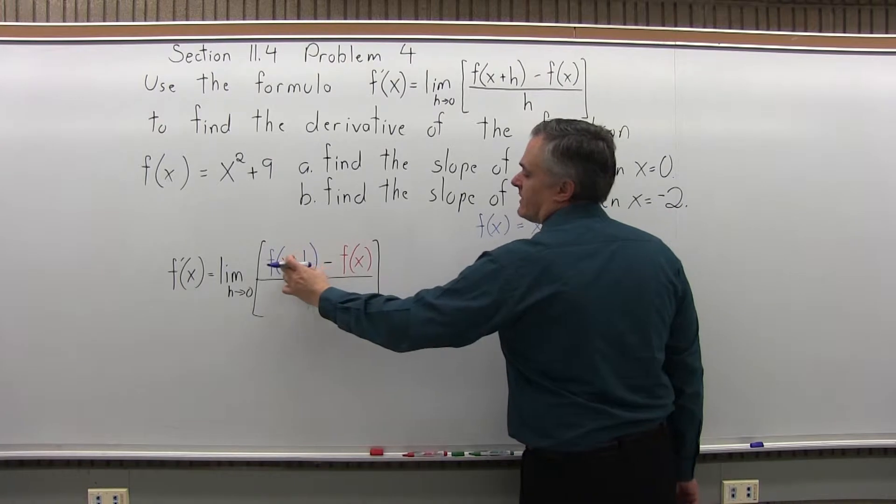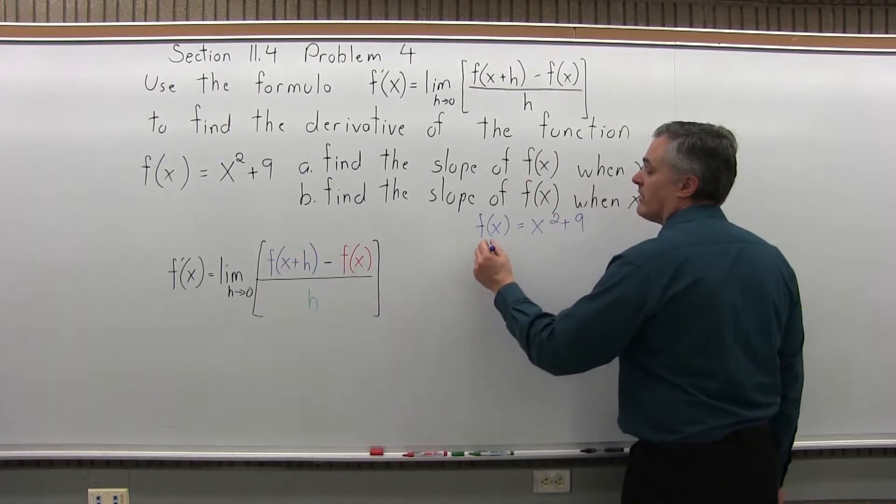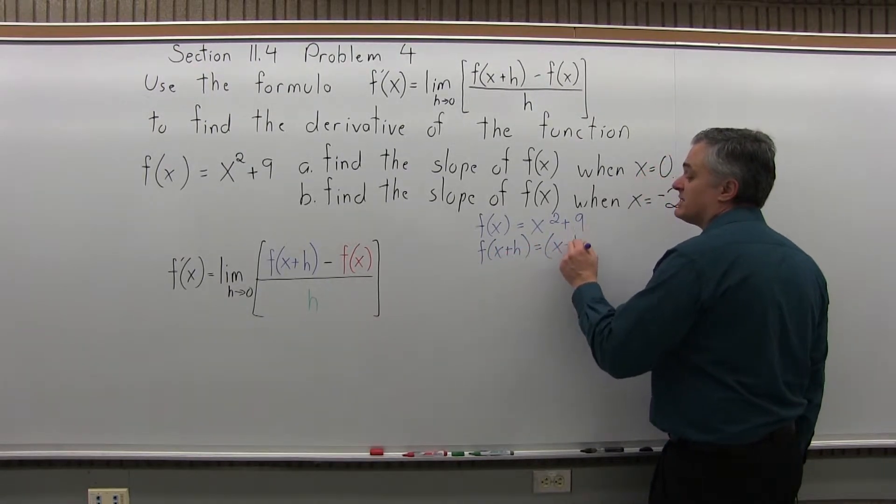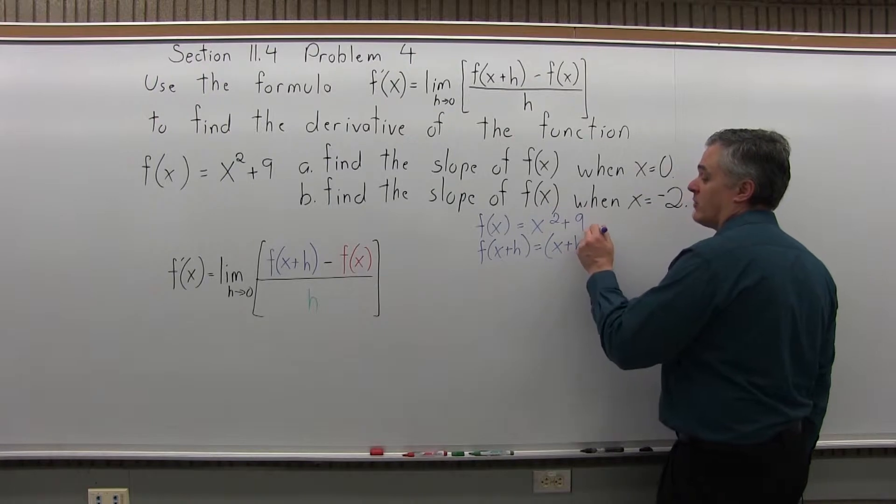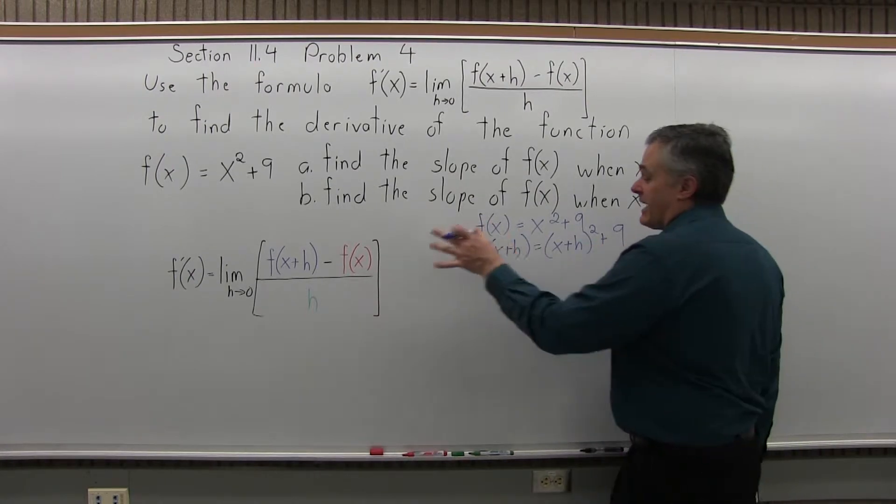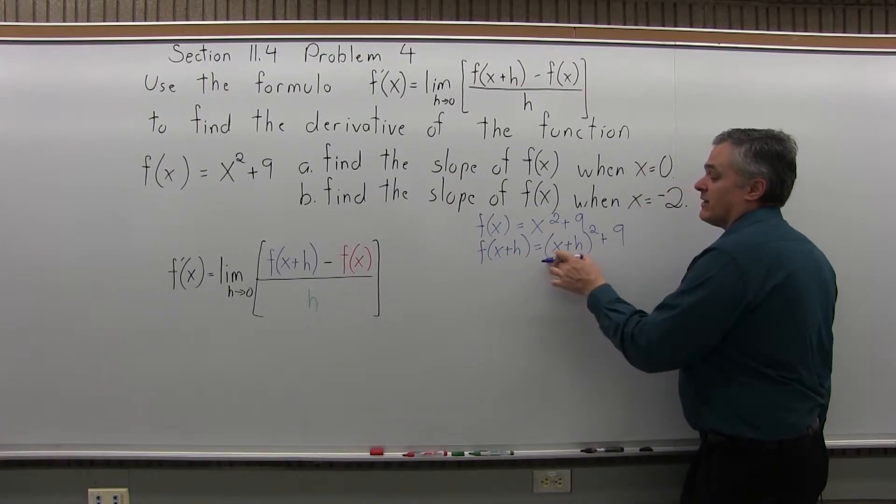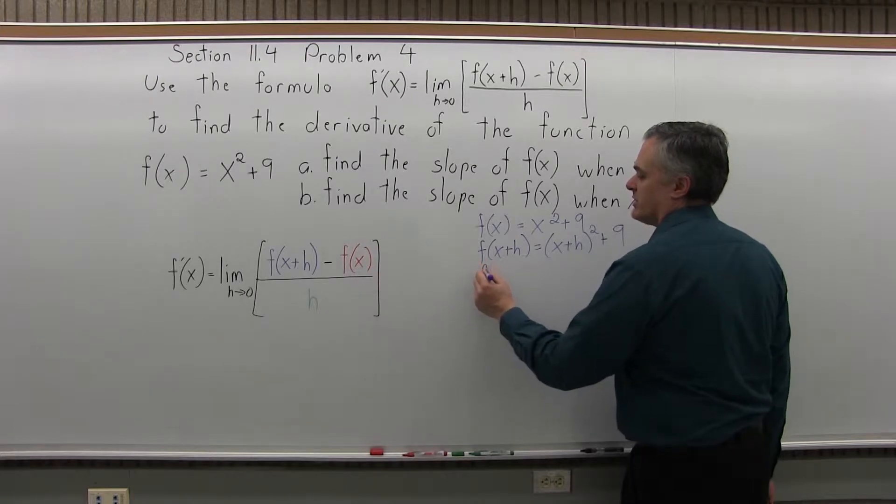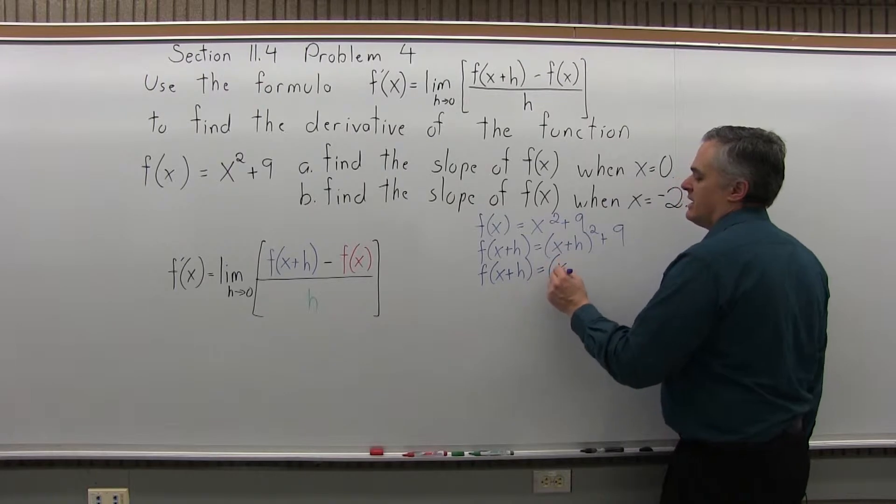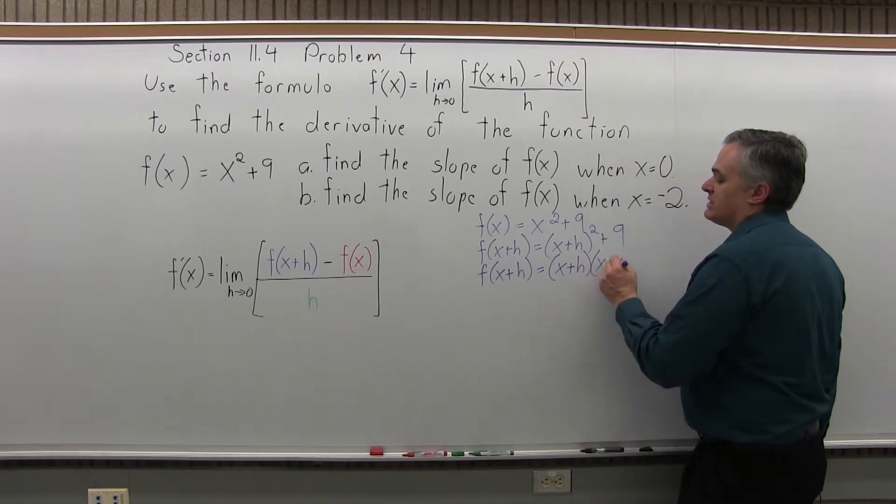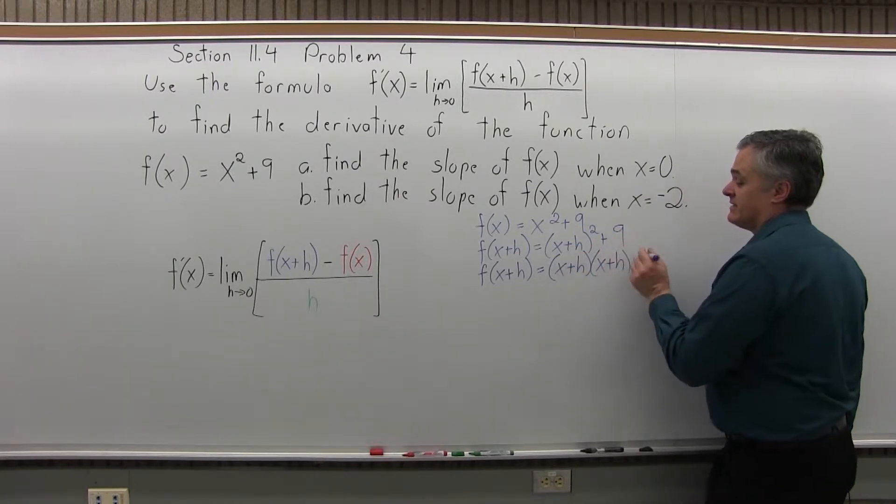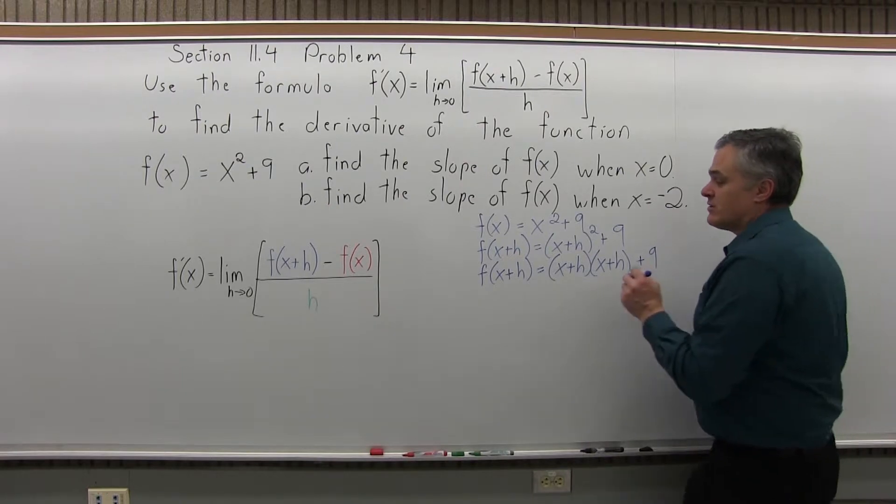Now f(x+h) says use x+h as an input. Wherever you have an x, put in x+h. So f(x+h) equals (x+h)² and whatever that answer is, I'm then going to add 9 to it. I have to simplify it. I have to FOIL out these parentheses before I can plug it into my difference quotient. So f(x+h) equals (x+h) times (x+h), that's what we mean by second power, this value times itself, and then this plus 9 on the end. Start doing the FOIL.